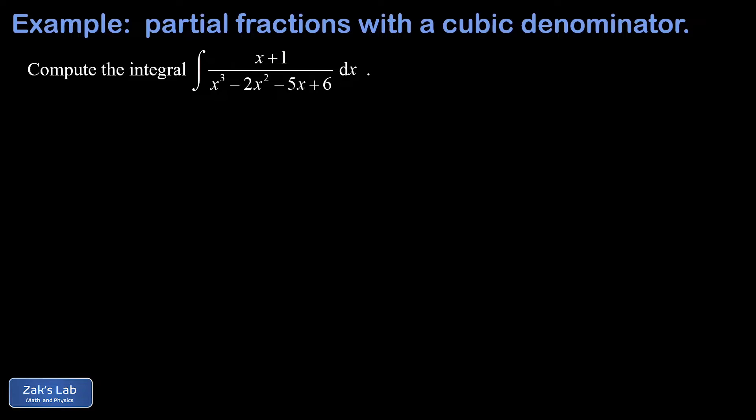And the first thing that we should try is to guess a small integer root of this cubic denominator. Now to explain the relationship between roots and factors, we can imagine that this denominator factors into three linear factors, and that may or may not be the case, it may just be one linear factor and one irreducible quadratic factor, but it doesn't ruin the argument here. So we imagine this thing factors into x minus a times x minus b times x minus c. Well where are the roots of this polynomial? In other words, where is it equal to zero?